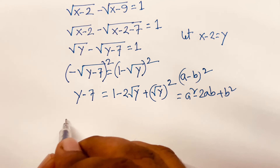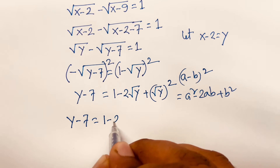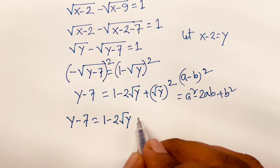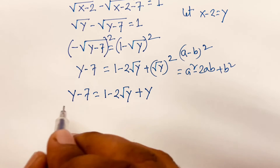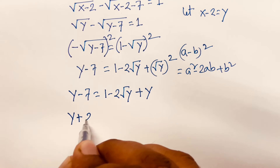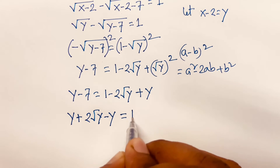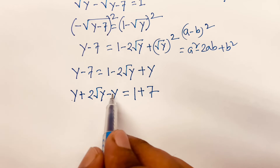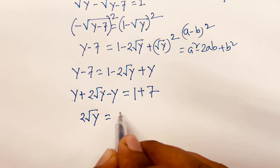So y minus 7 equals 1 minus 2 square root y plus y. The y terms cancel, leaving minus 7 on the left and 1 on the right after moving terms: 2 square root y minus 2 square root y simplifies further. Moving terms across: we find 2 square root y equals 1 plus 7, which is 8.